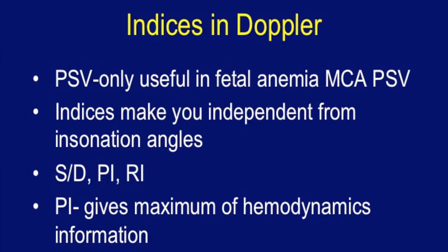Regarding useful indices in Doppler: PSV is only useful in fetal anemia assessment, specifically MCA PSV. Indices are important because they make you independent from insonation angles, which are very difficult to keep constant during obstetric Doppler. The indices are S/D, PI, and RI — out of which PI is the only useful Doppler parameter in obstetric Doppler, as it provides maximum hemodynamic information and all stage-based protocols are based on PI values.